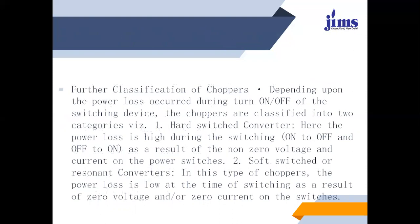Further classification of choppers depends upon the power loss occurring during turn on or off of the switching device. Choppers are classified into two categories. First is the hard switched converter, where the power loss is high during switching on to off and off to on, as a result of non-zero voltage and current on the power switch. Second is the soft switched or resonant converter, where the power loss is low at the time of switching, as a result of zero voltage and/or zero current on the switches.